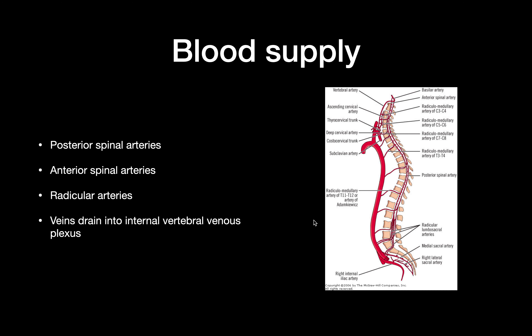The blood supply includes the posterior spinal arteries, the anterior spinal arteries, and the radicular arteries that go around and feed the vertebrae from the sides. All of the veins drain into the internal vertebral venous plexus.